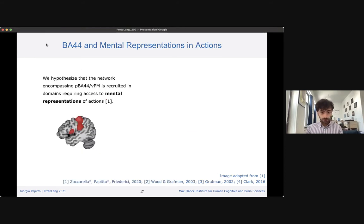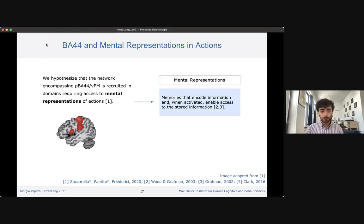So in our paper, we hypothesized that the recruitment of this posterior portion of BA44 in the action domain might be dealing with accessing and maintaining mental representations of actions, which are required in tasks where the steps of an action have to be retrieved. Mental representation can be a rather vague label for a cognitive process, but what we mean is really simple. Mental representations are forms of memories that can be retrieved and activated in order to access some sort of stored information. Importantly, these representations are considered to be probabilistic and action-oriented.